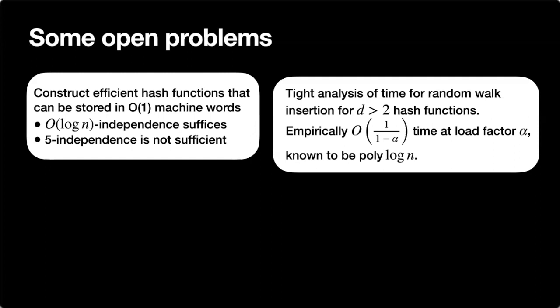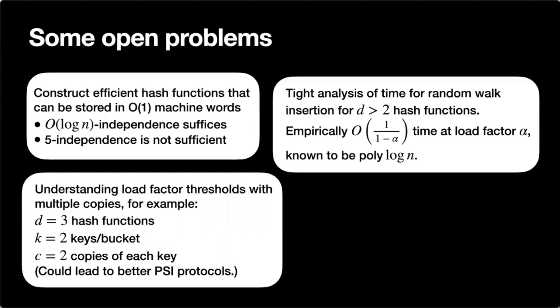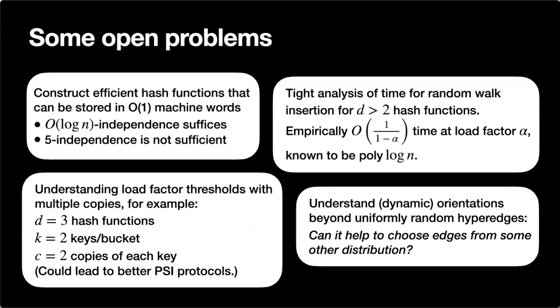A less studied open problem is the load factor threshold with multiple copies. For example, the case of three hash functions, two keys per bucket, and two copies of each key is not well understood, and these parameters appear empirically to lead to better protocols for private set intersection. Finally, building on recent developments in peelable hypergraphs, it would be interesting to understand what happens if we go beyond uniformly random hyperedges — whether choosing edges from some correlated distribution could help, particularly in the dynamic setting.